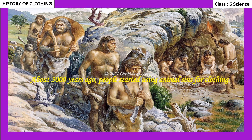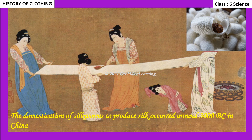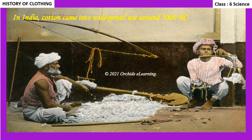About 30,000 years ago, people started using animal skins for clothing. It is believed that wool was used as early as 6,000 years ago. The domestication of silkworms to produce silk occurred around 3000 BC in China. In India, cotton came into widespread use around 3000 BC.